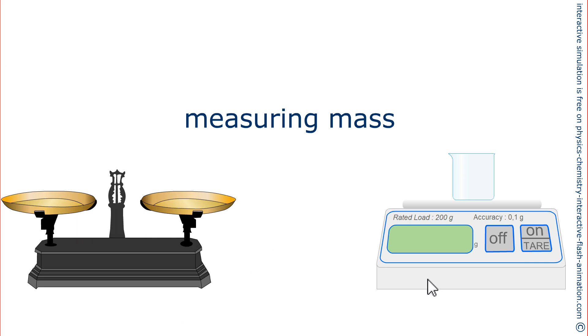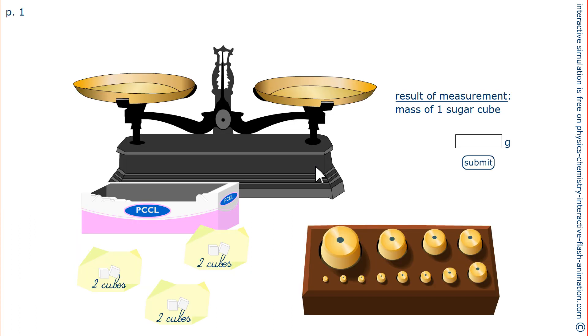For this we use a traditional mass balance or an electronic scale. On the screen you see a double pan balance formally used in laboratories. This object has become historical.